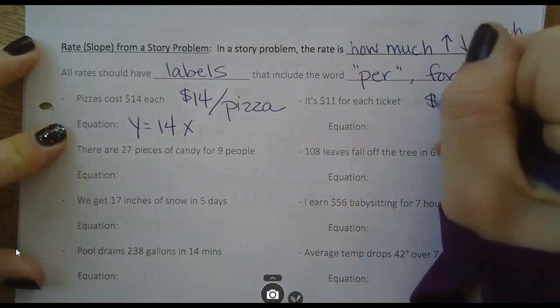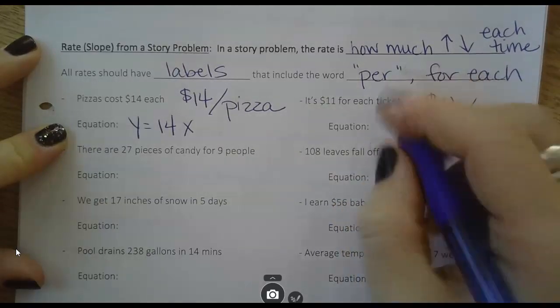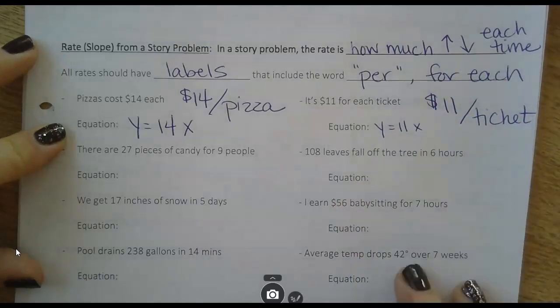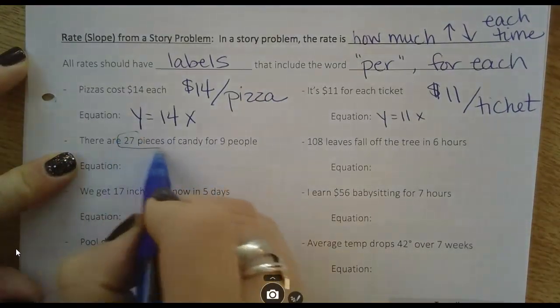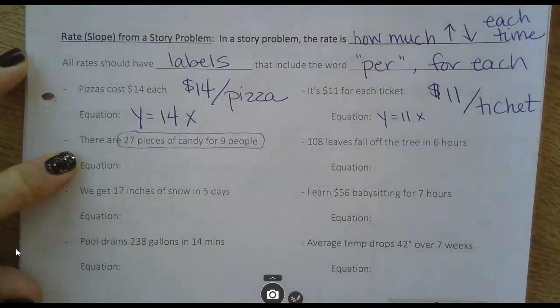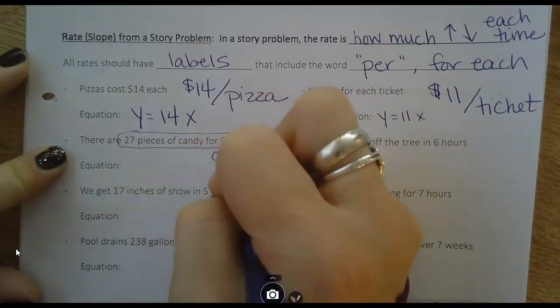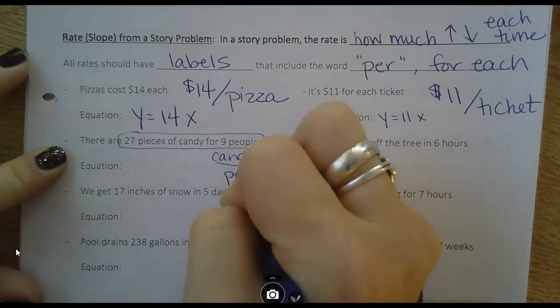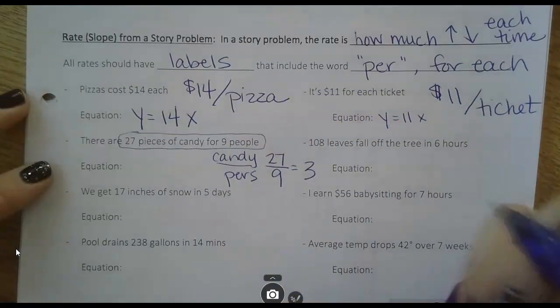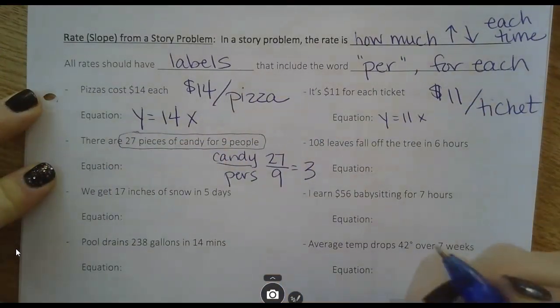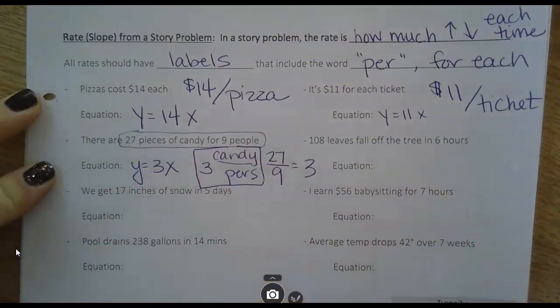$11 for each ticket. Pretty simple - $11 per ticket. Nothing I have to really do there. I know the rate is 11, and I can put it right into my equation, y equals 11x. But what if there are 27 pieces of candy for 9 people? I need to turn this into a unit rate, like we did at the beginning of chapter 5. I need to think about which way makes sense. I want to know how much candy per person. So I'm going to do 27 divided by 9, and that comes out to 3. So 3 pieces per person, with a label. I could say it this way: 3 pieces of candy per person. And then my equation.